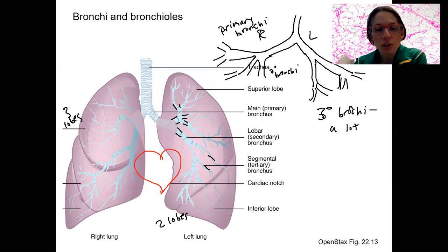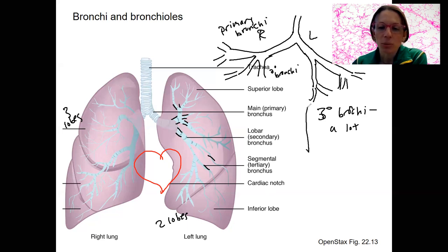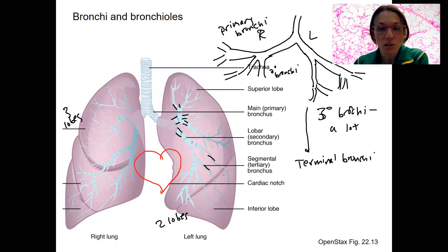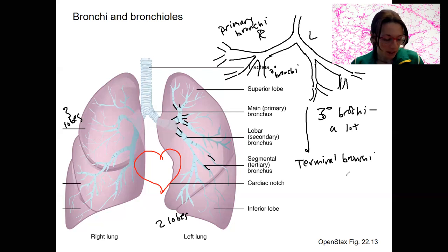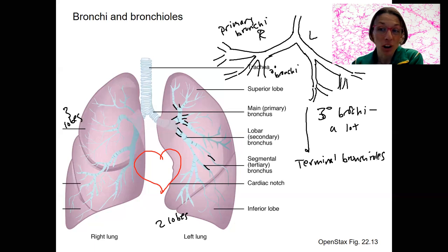There's going to be continued branching after these tertiary bronchi until eventually we get to terminal bronchioles. Bronchioles are little bronchi, so the bronchi divide into bronchioles.